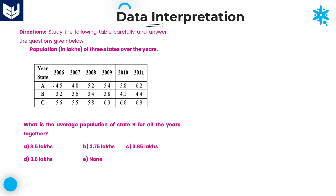See the information which is given in this table. Here the information is about population of three states over the years. Here three states population is given: A, B, C. These are the three states.